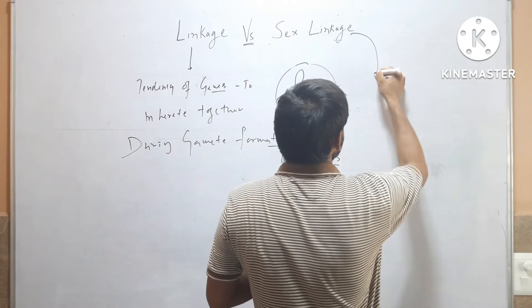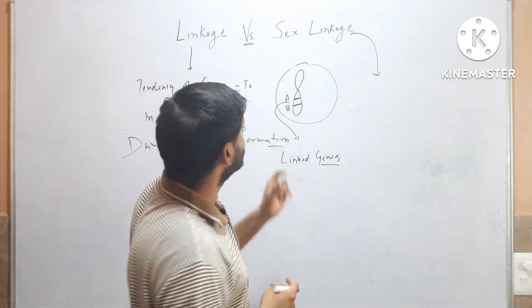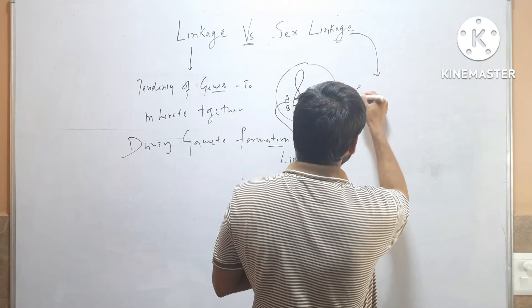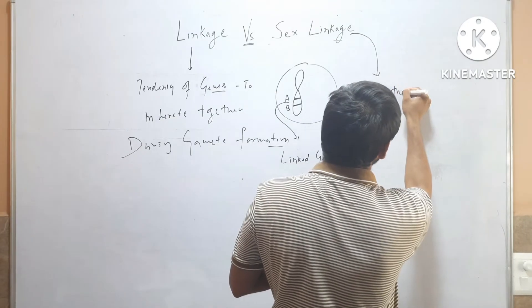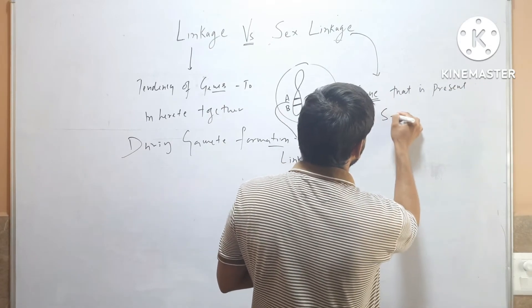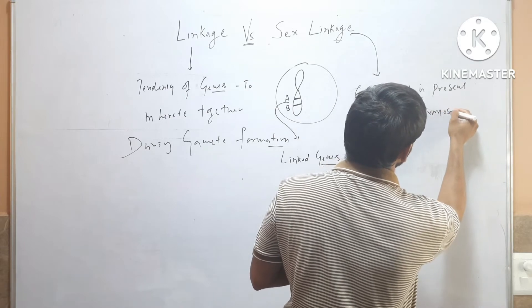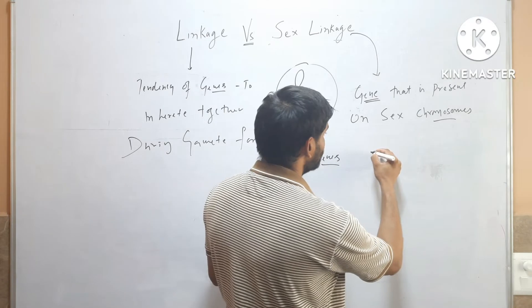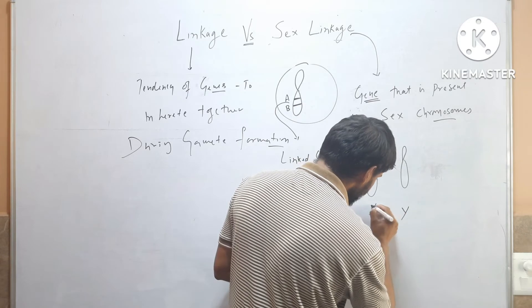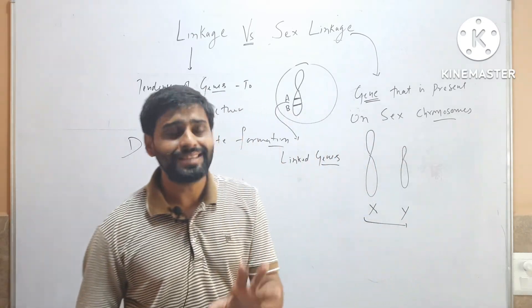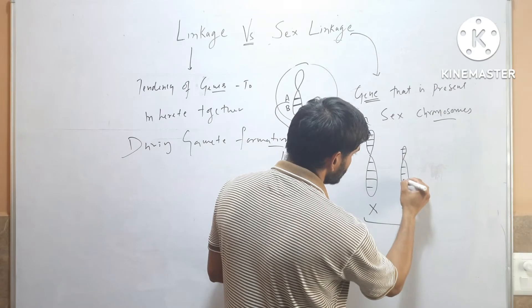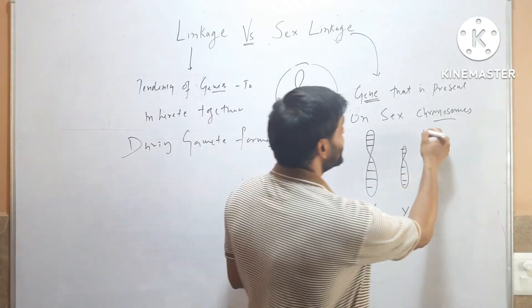Sex linkage is different from linkage. Sex linkage means any gene that is present on sex chromosomes. In case of humans, we know that we have X and Y chromosomes. These X and Y chromosomes are sex chromosomes, so any gene that is present on these chromosomes will be called sex linked genes.